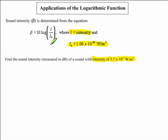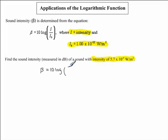We are going to use these three pieces of information along with the given formula to solve this problem. I'll rewrite the formula: beta, which is our sound intensity, is equal to 10 times the logarithmic function of i divided by i0. Our question asks us to find beta, so we need to find the values for i and i0.